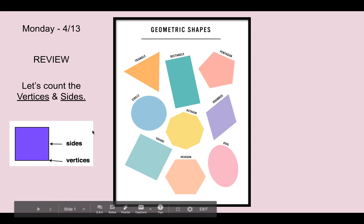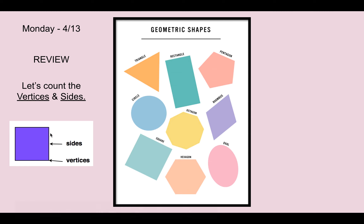If I look here at our little example, I can see that our square has one, two, three, four sides. If I count the vertices — those are the corners — I can count one, two, three, four. So, a square has four sides and four vertices.